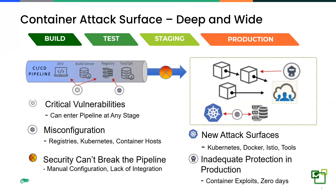Inadequate production protection is also a concern — consider the traditional attack surface at the application layer, exposed applications, or modern API services being attacked. Whether those are exploits of a vulnerability running in a container, or zero-days with no CVE available yet, those things have to be monitored. You have to have visibility if there is an attack in progress, and ideally you want to prevent or block it in real time — even in a containerized environment.